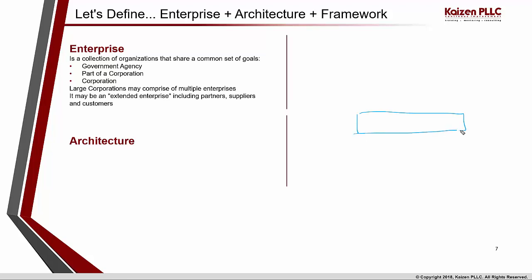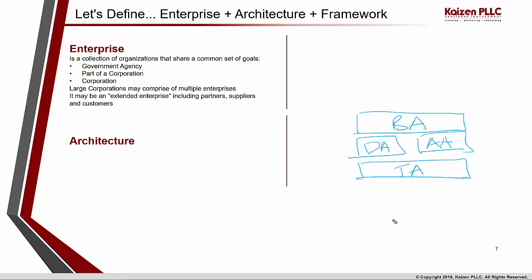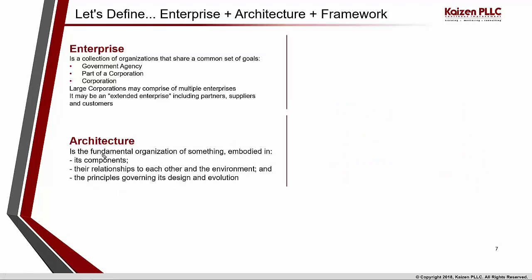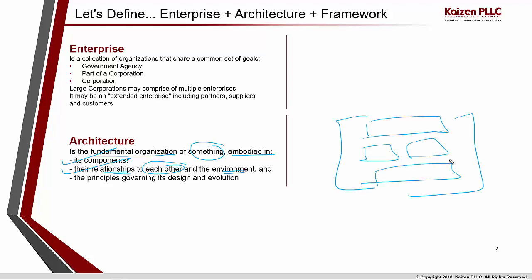The four key architectures are: business architecture, data architecture, application architecture, and technology/infrastructure architecture — and of course these are governed by governance architecture, security architecture, etc. By definition, an architecture is the fundamental organization of something — whether from a civil industry, manufacturing, or IT perspective — which is embodied in its components, the relationships between each other and the environment. Your enterprise is the environment, and your enterprise has these four primary architectures: business, data, application, and technology, along with guiding principles governing its design and evolution.